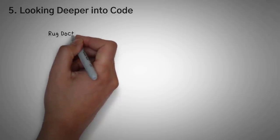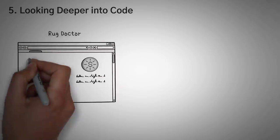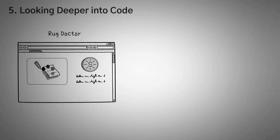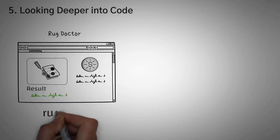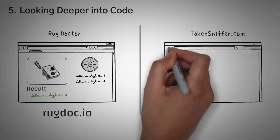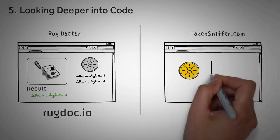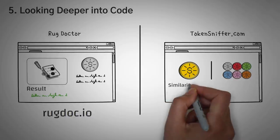First, you want to go check out the project on Rug Doctor. They have a website dedicated to actually reviewing the smart contract code and identifying common rug pull techniques. They then use their website, RugDoc.io, to inform visitors of these scams.